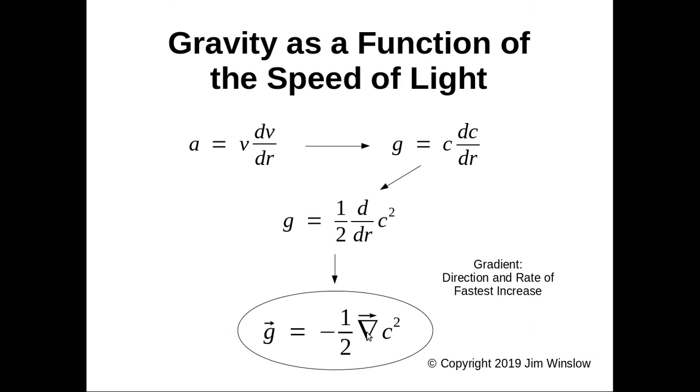This symbol here, this upside down triangle, is a gradient. Gradient is defined as direction and rate of fastest increase. So let's say you were out in space and you can measure the speed of light squared where you are and all around you. This gradient in front of c² is the direction in which light speed is increasing the most.